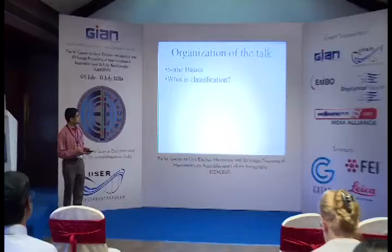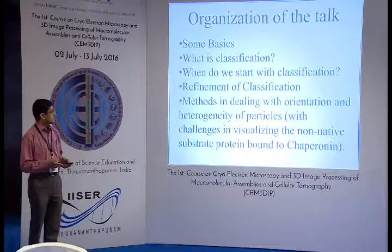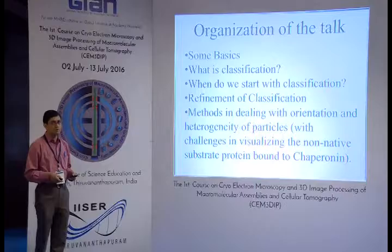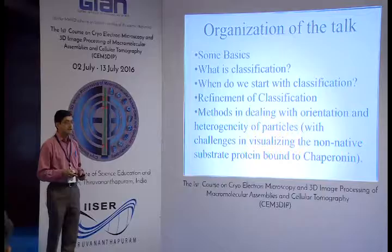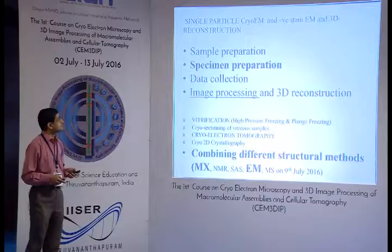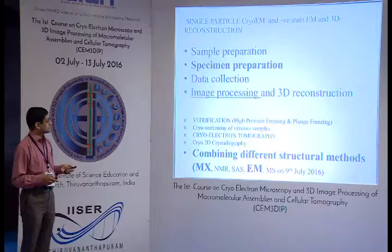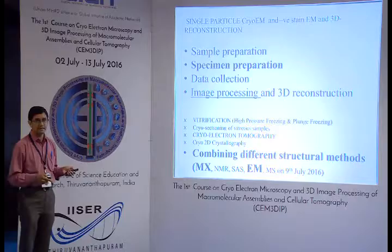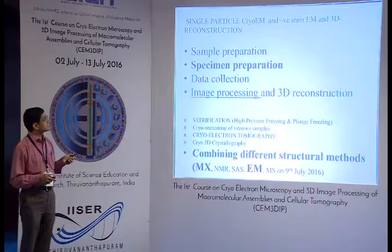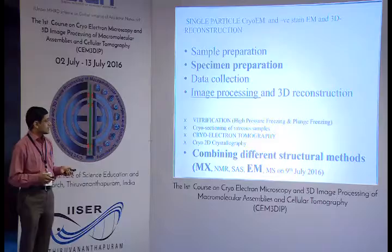Some basics regarding classification: what do we mean by classification, when do we really start the classification, can we do the classification in the beginning itself without alignment, refinement of classification, and how do we deal with orientation and heterogeneity of particles — with challenges in visualizing non-native protein, in particular the project in which I have worked: protein bound to chaperonin. The classification basically comes in the later stage, in the fourth stage where image processing takes place, and I'm going to talk mainly about single particle EM classification.